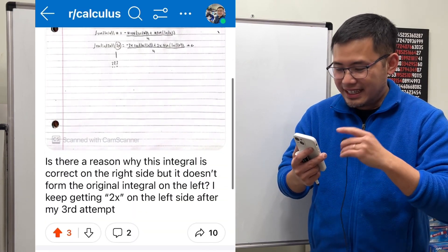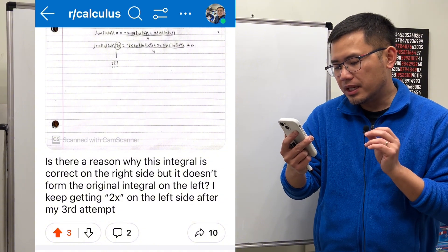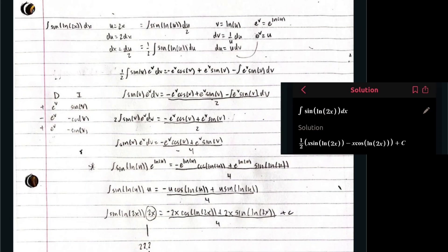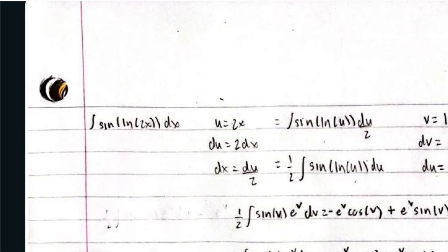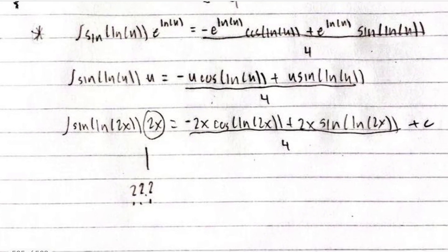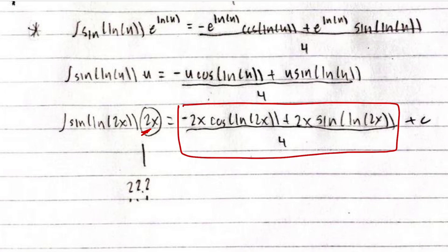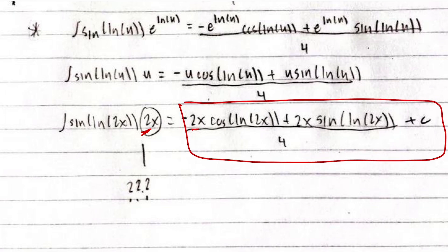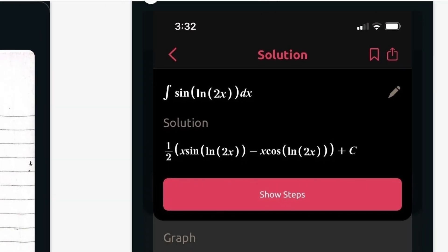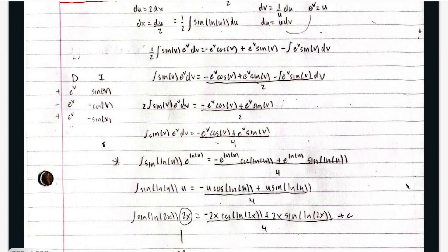A student asks: with integration by parts and u-substitution, why does the integral on the left side not match the original? After doing it three times, there's an extra 2x appearing on the left side. So the question is: we have the integral of sin(ln(2x)), and after all that work we end up with an extra 2 on the right-hand side, which is already the correct answer — so why is that extra 2 appearing?